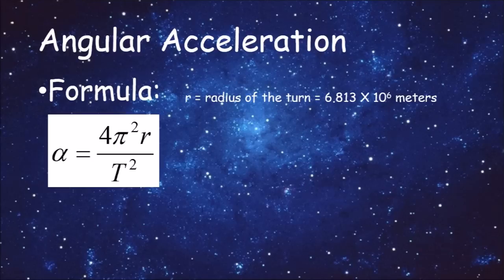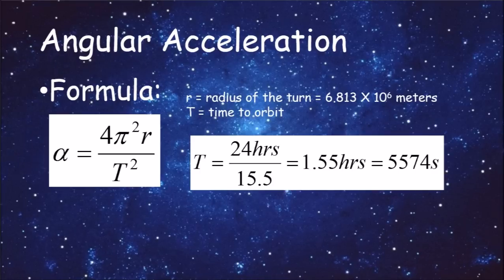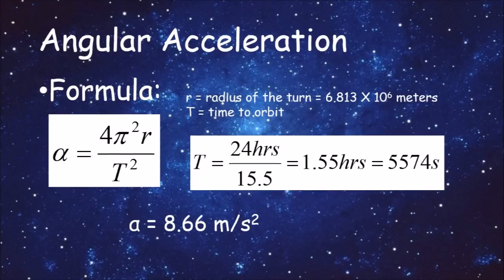Just how much angular acceleration are they being subjected to in the ISS? Let's do some more math. The formula for angular acceleration is shown here, where r is the radius of the turn or the orbit, which we found previously at 6.813 times 10 to the 6 meters. Big T is the time it takes to make one orbit. There are 15.5 orbits in a 24-hour period, equating to 1.55 hours, which further equates to 5574 seconds per orbit. When you plug all these values into the formula, you come up with 8.66 meters per second squared as the angular acceleration of objects in the ISS.